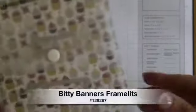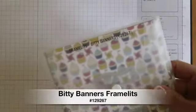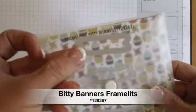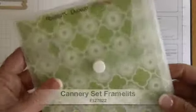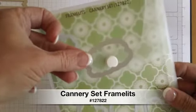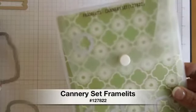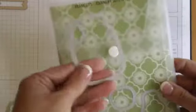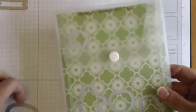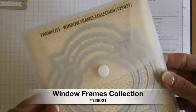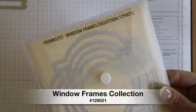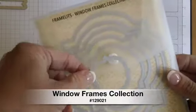The first is the Biddy Banner Framelits. We'll be using this little guy from the Biddy Banners. We'll also be using the Cannery Set and we're going to use the top of the jar and the jar itself. You need both of those framelits and we'll even need the window frames collection. We're going to be using the littlest little guy out of that set.